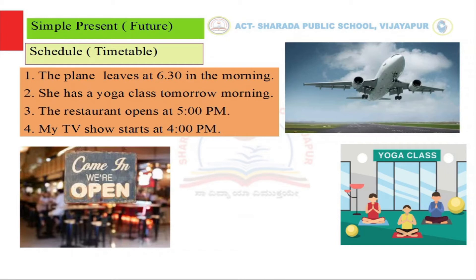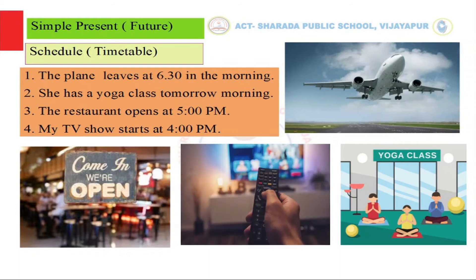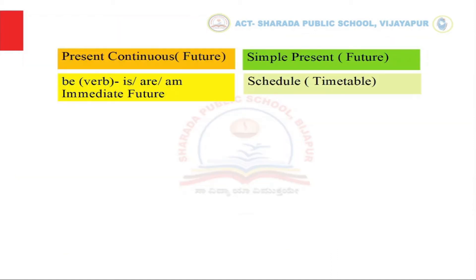Here are more examples: 'She has a yoga class tomorrow morning.' 'The restaurant opens at 5 p.m.' — this happens in the future but we use simple present because it is a daily schedule. 'My TV show The Big Bang Theory starts at 4 p.m.' — again it's routine, a schedule that takes place in the future, but it's still a schedule so we use the simple present tense.